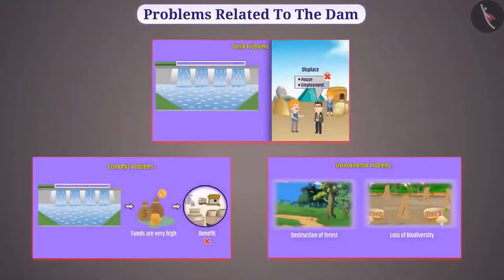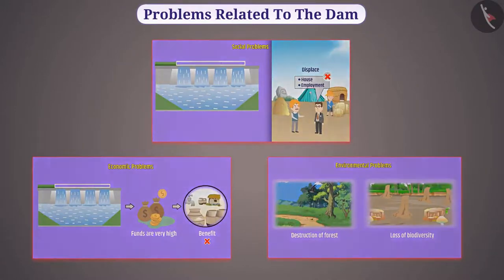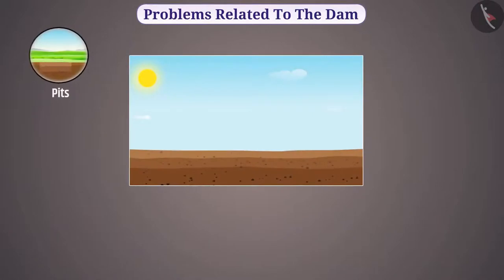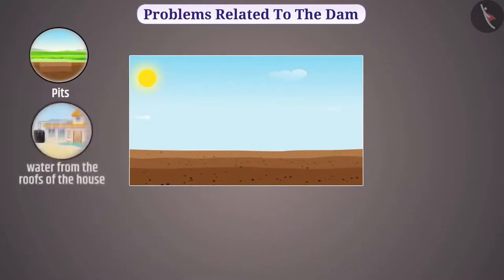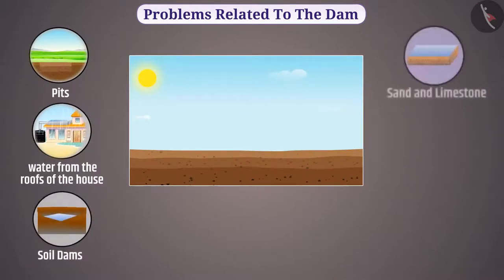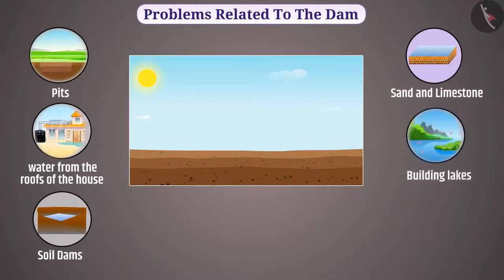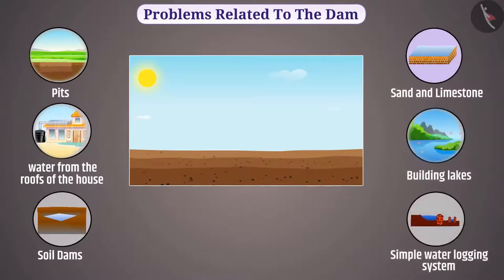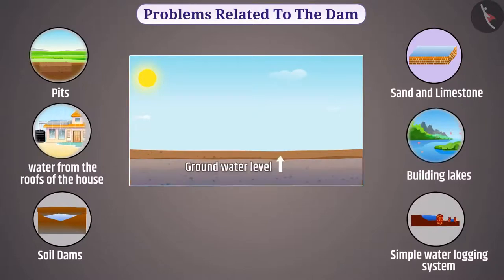As alternatives to these problems, there are several other methods. We use various methods such as digging small pits, collecting water from the roofs of houses, making small soil dams, making water collectors made of sand and limestone, building lakes, and setting up simple water-logging systems. These methods can increase the groundwater level.